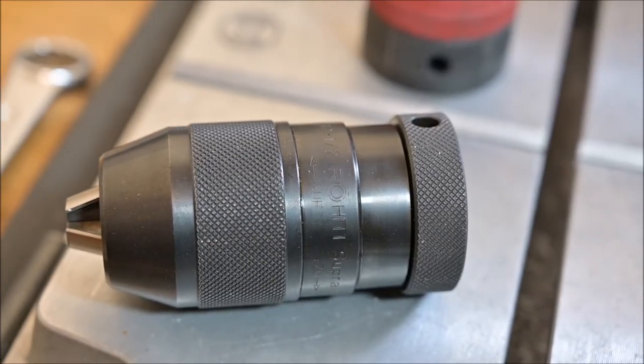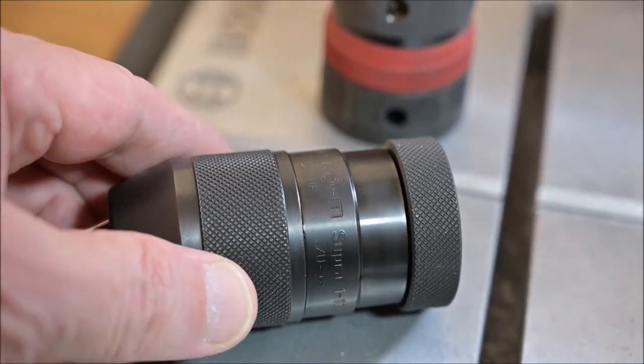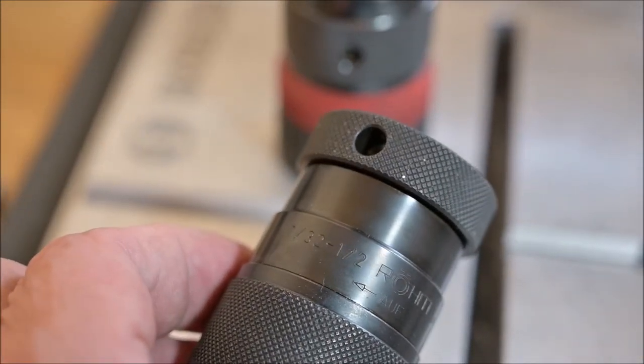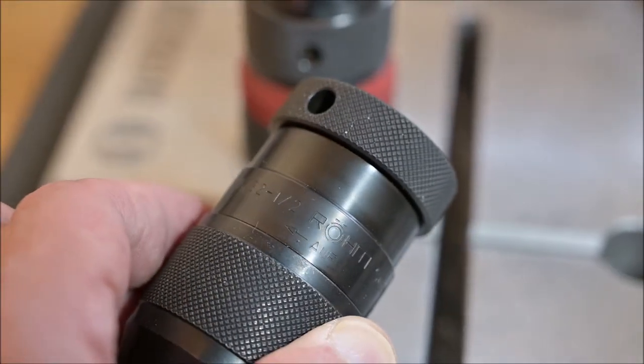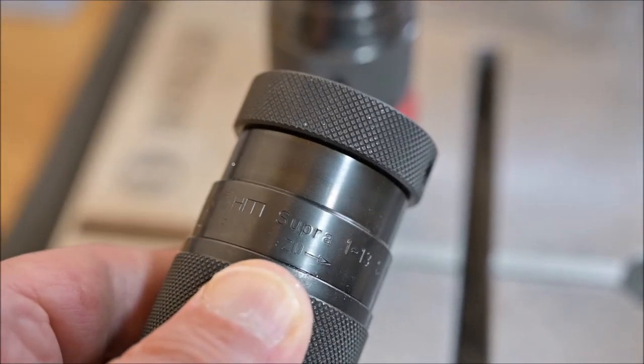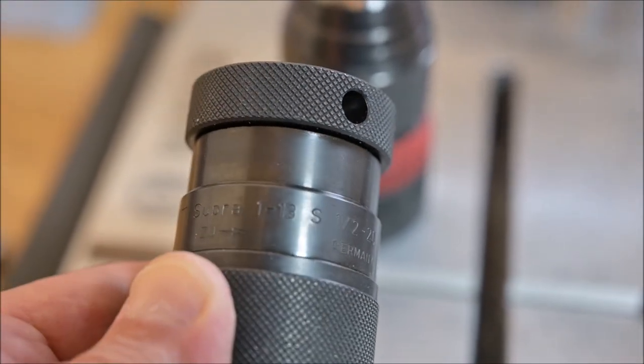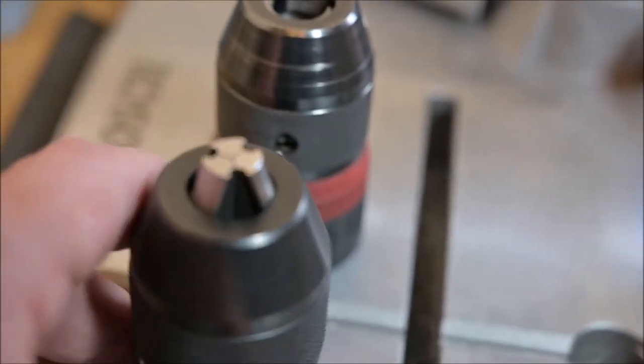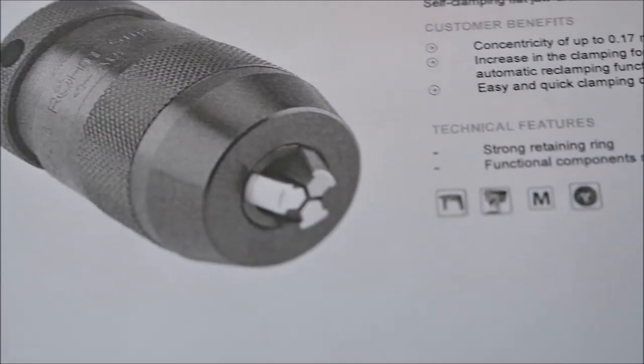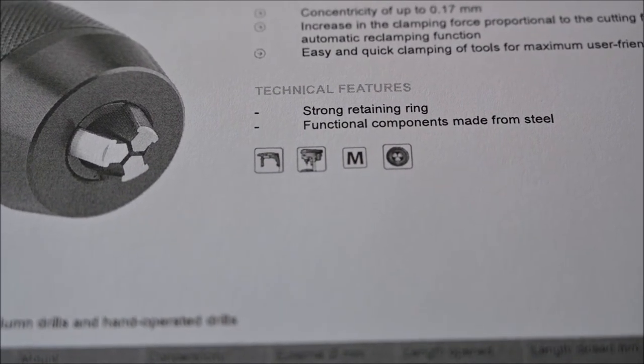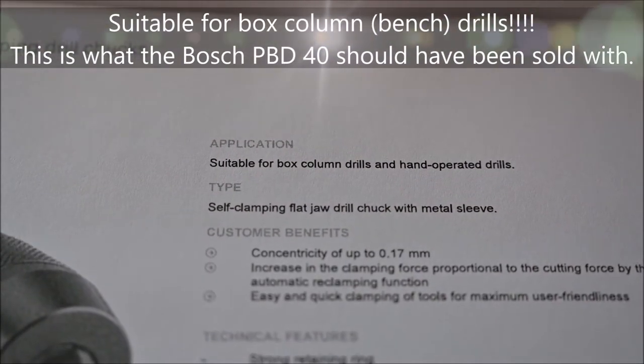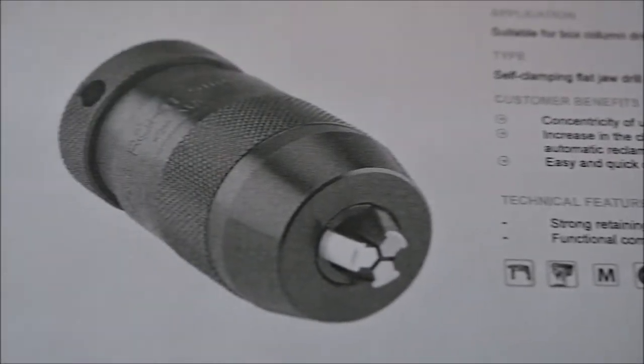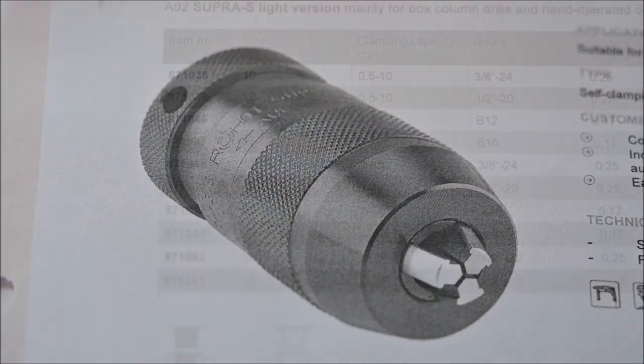The new chuck is also from Röhm, but it's the Supra S, 1 to 13 millimeter, and it has much better data according to the specifications. And of course it doesn't have the locking ring, which is also a plus. As you can see, this one is actually intended for bench drill machines as well as hand drill machines. And my opinion is that Bosch should have installed this chuck on the machine when they started manufacturing this otherwise very nice bench drill machine.